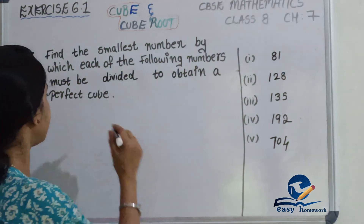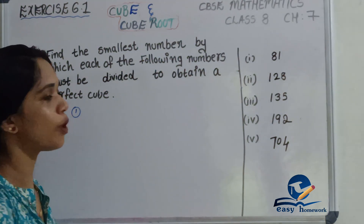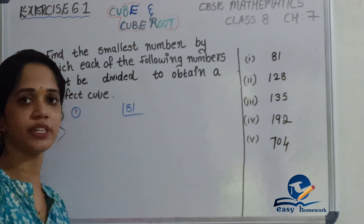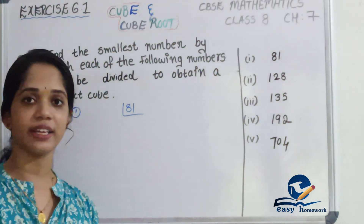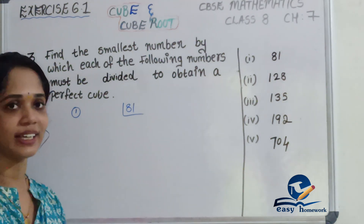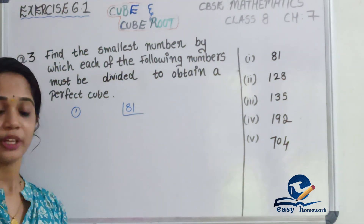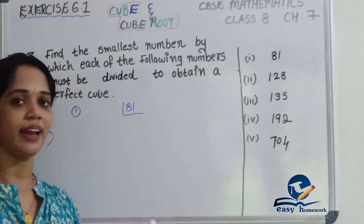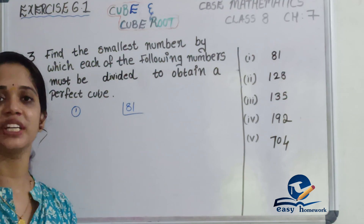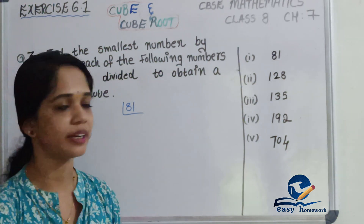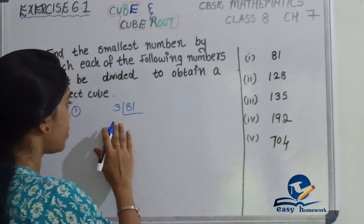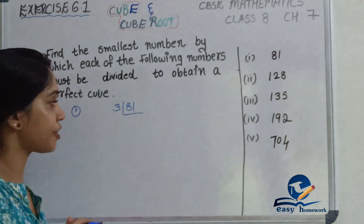The first question involves the number 81. What should we do? We will do prime factorization. When we do prime factors, we determine which number to divide to obtain a perfect cube. From 81, we will take the prime factorization.